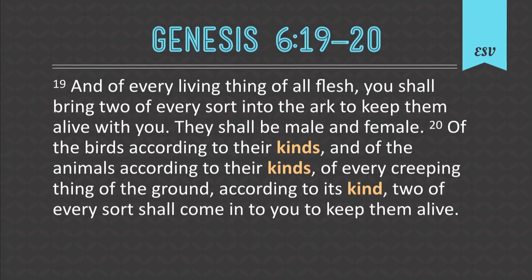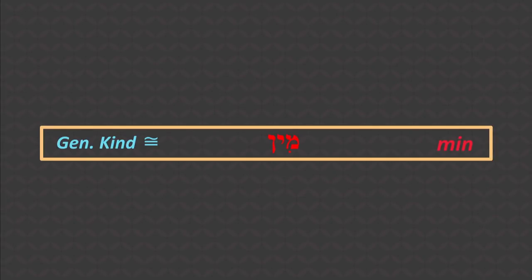One of the questions people ask is, how can Noah get all the animals on the ark? When Bill Nye was on this stage debating me, one of the things he said was he mocked me for believing in Noah's ark — Noah couldn't fit the millions of species on the ark. But the Bible doesn't say species went on the ark. It uses a Hebrew word, the word 'min,' which we translate as 'kind.' In the Latin Vulgate they used the word 'species,' but that word has since been redefined, which makes it more complicated.